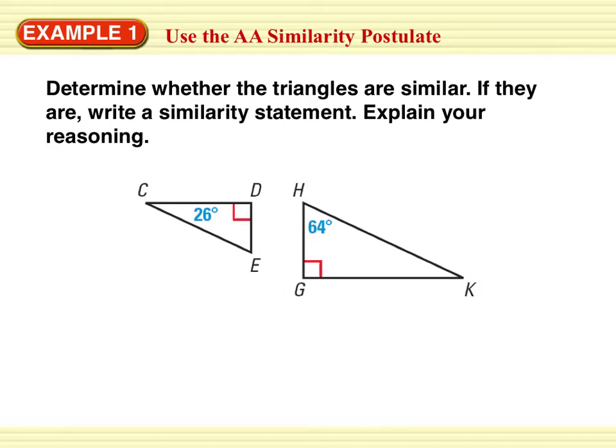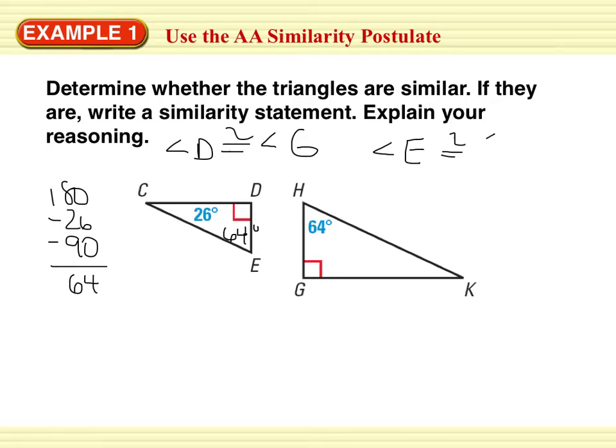First of all, I can say that angle D is congruent to angle G, because they are both right angles. Right angles are congruent. By the triangle sum theorem, I know that the measure of angle E is 64, because 180 minus 26 minus 90 is 64. So angle E is congruent to angle H, correct?